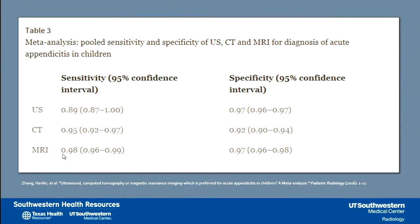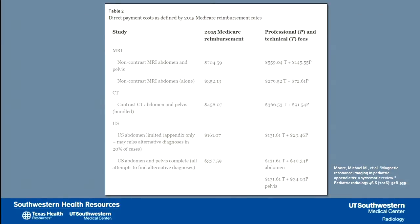A meta-analysis comparing ultrasound, CT, and MRI shows that they're all very good. In terms of cost, ultrasound is the least expensive, while CT and MRI can be two, three, or more times the cost of an ultrasound.